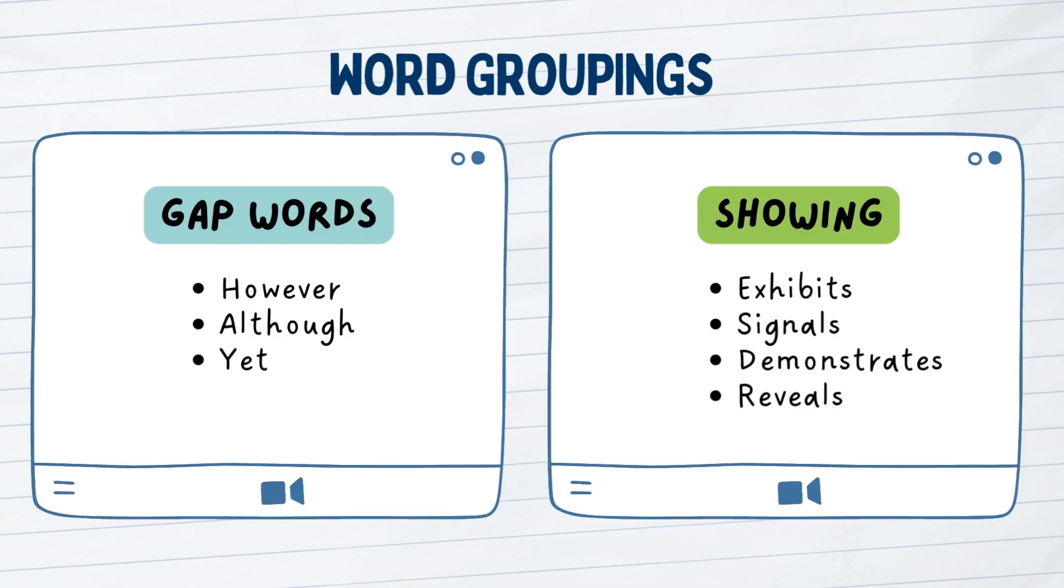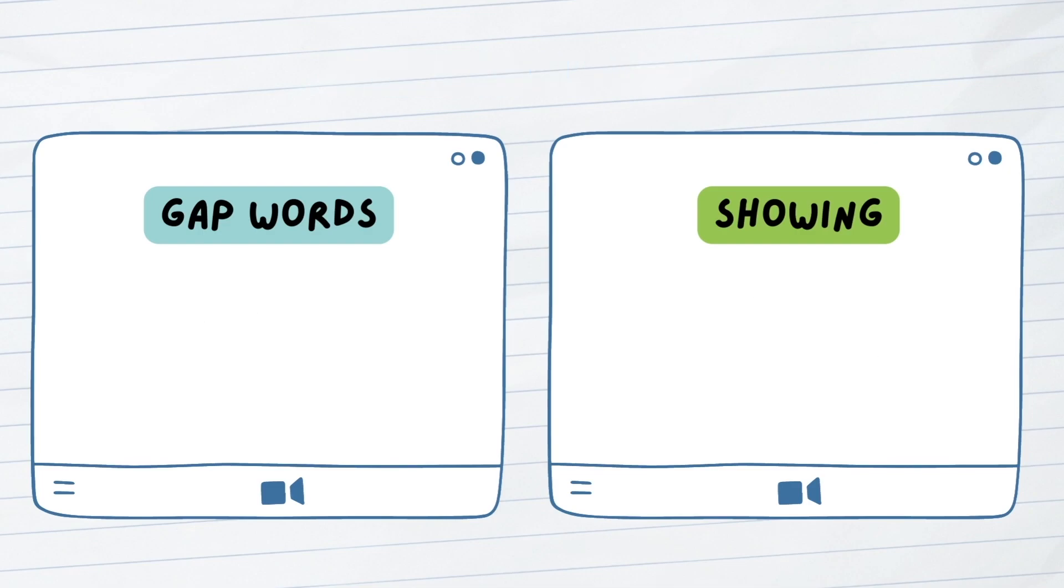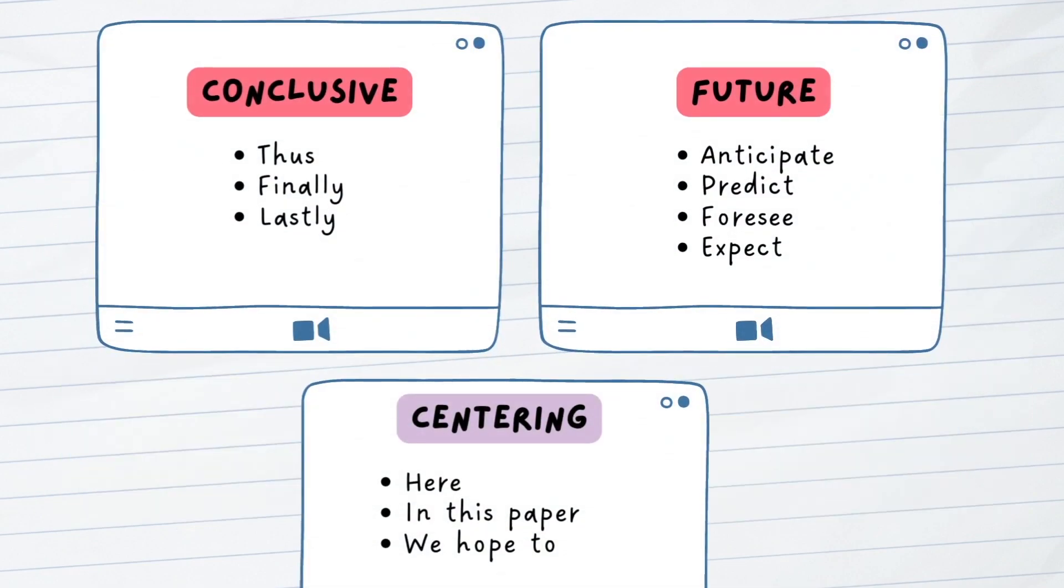Showing words such as exhibits, signals, demonstrates, reveals, and etc. can be used in the abstract to explain what methodologies were used to get to a key conclusion of the study. Centering phrases such as here, in this paper, and we hope to emphasize what the goals are for the investigators, centering the point or reason for conducting the investigation in the first place.